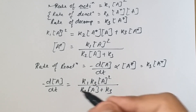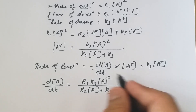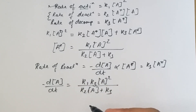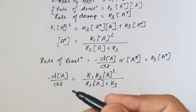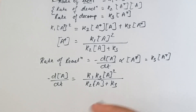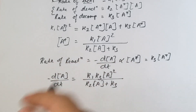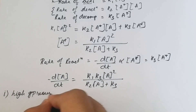In order to find the order of the reaction, we consider two limiting cases. Since we are considering gaseous molecules, the two limiting cases are at very high pressure and at very low pressure. These two cases allow us to simplify the general rate expression.